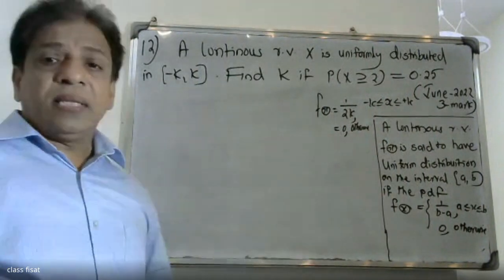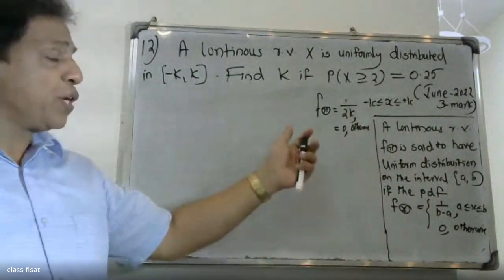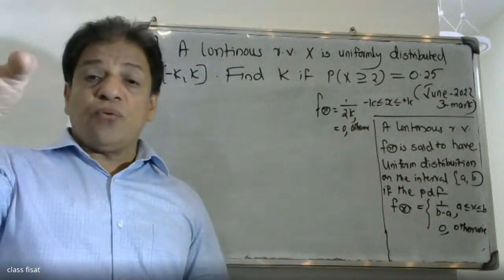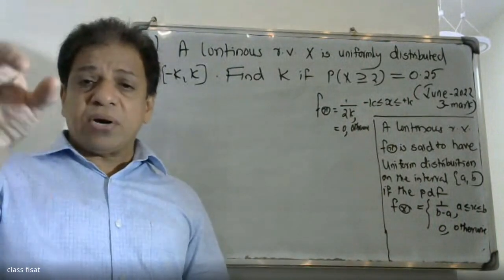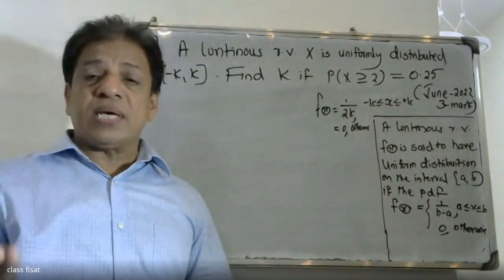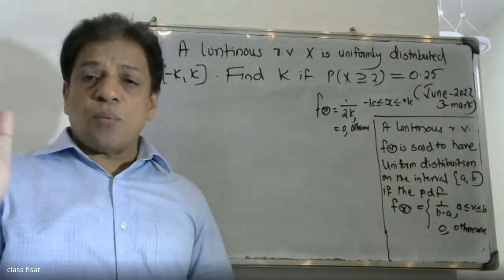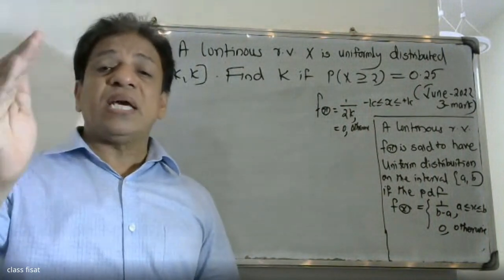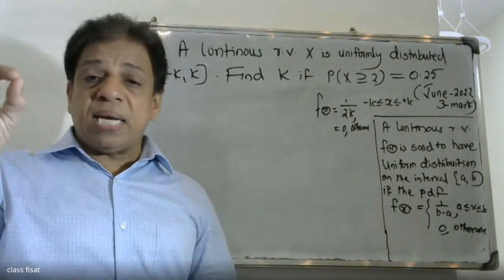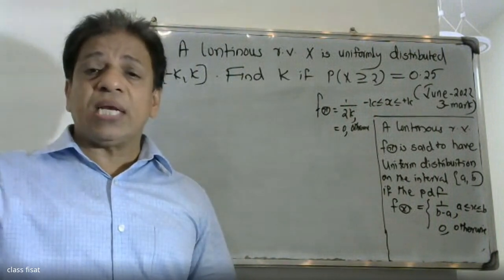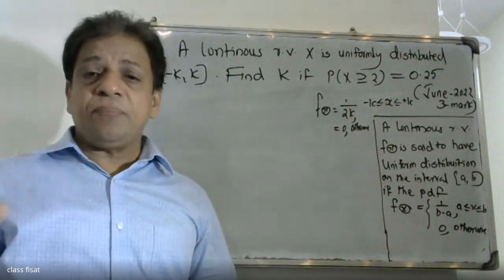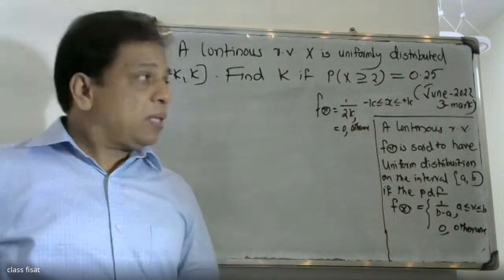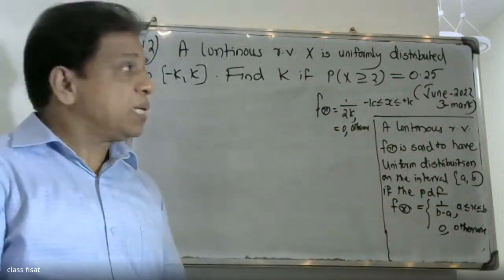We will define F of x for this problem. F of x equals 1 by 2k, where the upper limit is plus k and the lower limit is minus k — so k minus minus k gives 2k — in the interval minus k less than or equal to x less than or equal to plus k, and 0 otherwise.